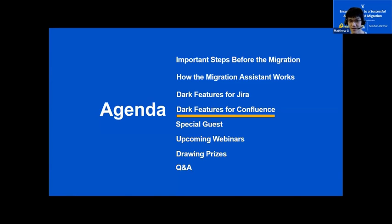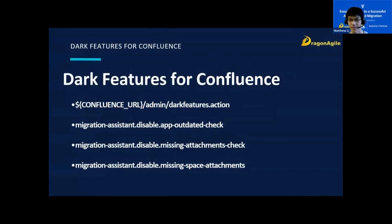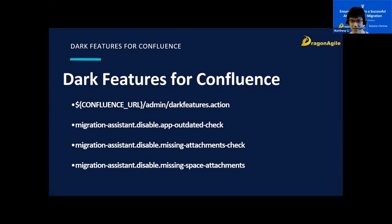Now we'll talk about some dark features for the Confluence Cloud Migration Assistant. To access the Confluence dark feature tab, go to your Confluence URL at admin.darkfeatures.action. The first feature is the app outdated preflight check — same as Jira, this should only be bypassed during the testing phase and bypasses the check that forces you to upgrade the plugin. The second feature allows you to skip the preflight check for missing attachments, which can make the check faster, especially if you have millions of attachments. For the third one, if the assistant found some attachments missing during migration, it will normally fail the migration — with this feature, it will continue on with the migration even with missing attachments.